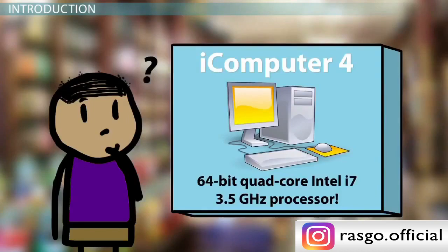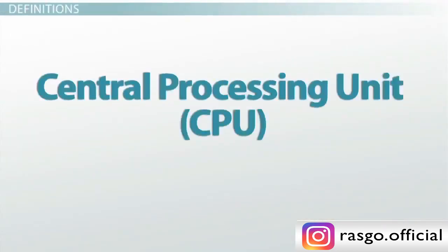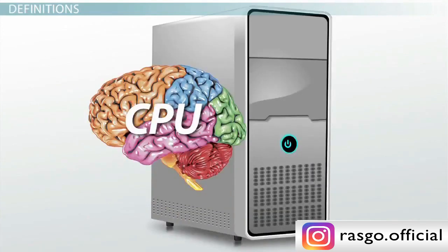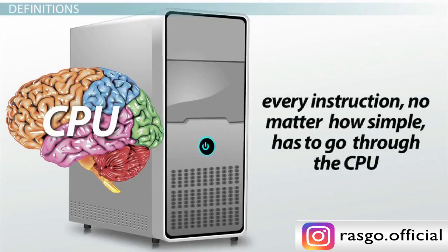To understand what the specifications mean, we first have to look at how the processor is designed and how it functions. The central processing unit, CPU, of a computer is a piece of hardware that carries out the instructions of a computer program. It performs the basic arithmetical, logical, and input-output operations of a computer system. The CPU is like the brains of the computer. Every instruction, no matter how simple, has to go through the CPU.